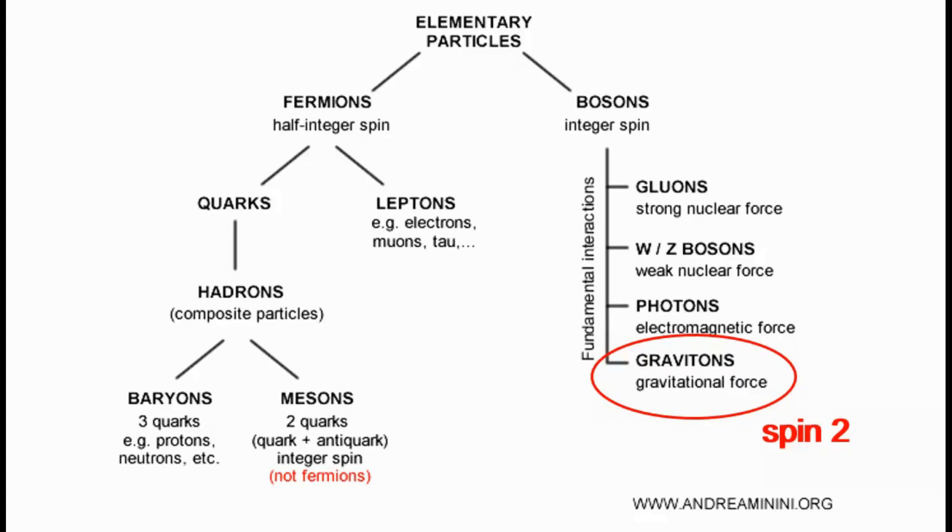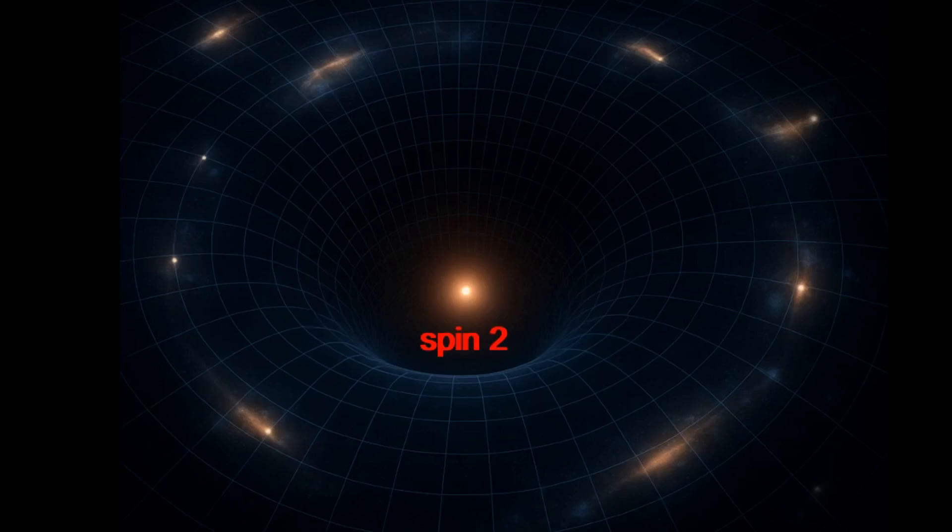Theory predicts that the particle that carries gravity, the graviton, must have spin-2. So the question is, what kind of reality, what kind of cosmic architecture, is created by a fundamental particle that is itself defined by spin-2?